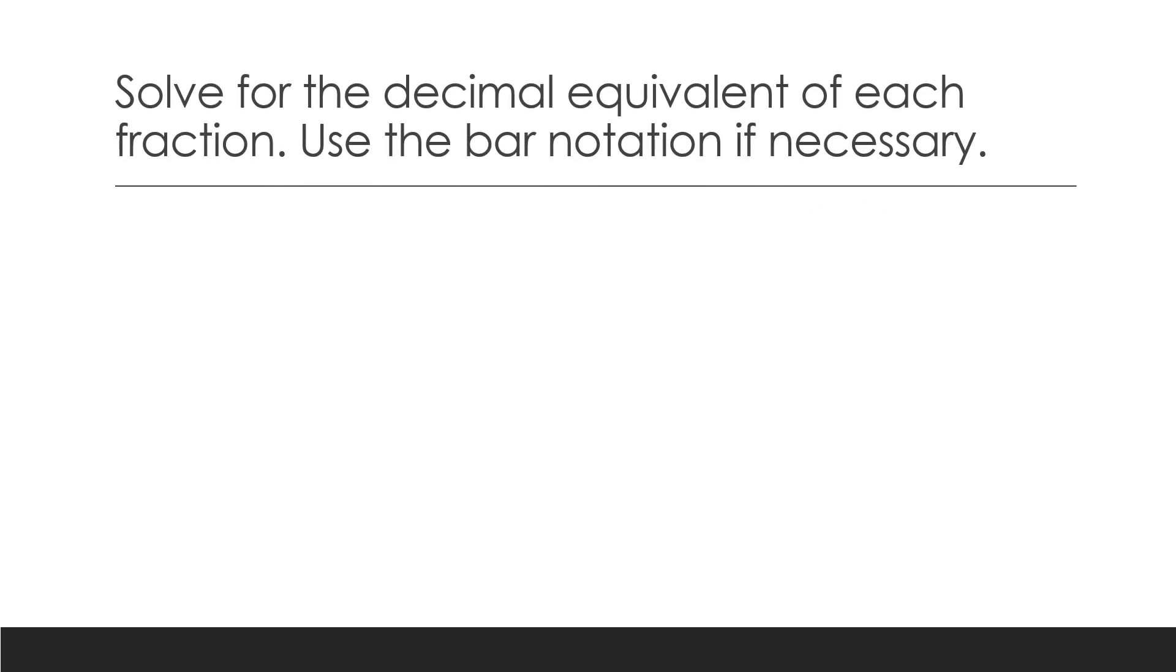Okay, so let us solve for the decimal equivalent of each fraction. Use the bar notation if necessary. Number one, the GCF is three. So if we're going to divide it by three, three divided by three equals one, and six divided by three equals two. So the decimal is one-half, or 0.5.